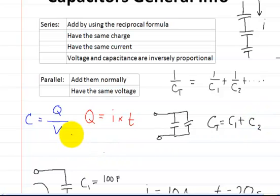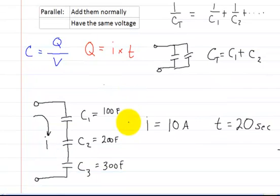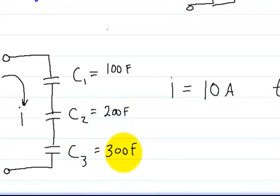The capacitance equals the charge divided by the voltage, and charge equals current multiplied by time in seconds. Here I wrote down a circuit with three capacitors in series: C1 is 100 farads, C2 is 200 farads, C3 is 300 farads. The current is 10 amps, and the charging time is 20 seconds.